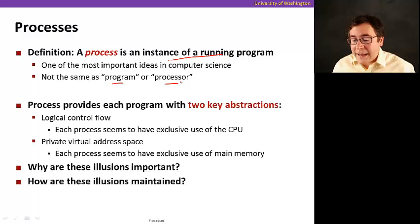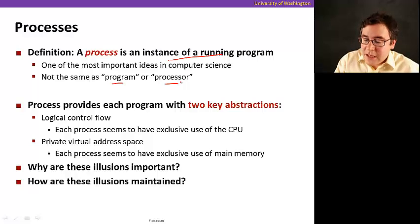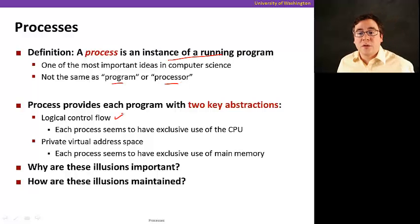And they provide two key abstractions. The first one is logical control flow. So that means that each process has the illusion that it has full control of the CPU, exclusive use of the CPU, which might not actually be in reality the case, but processes give this abstraction to programs such that it seems like they have full use of the CPU.